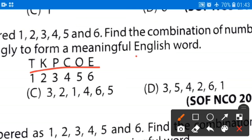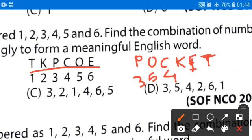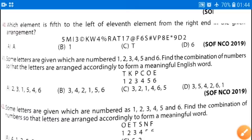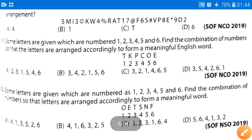I can make P-O-C-K-E-T. It will become pocket. P is the third position. O is the fifth position. C is the fourth one. K is the second position. E is the sixth position. And T is the first position. Correct option will be option number D. This is the correct answer. Option D.